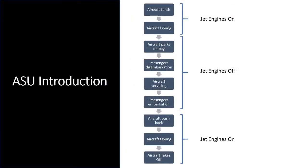We have already studied the sequence of activities that take place between an aircraft landing and takeoff. Jet engines are turned off when the aircraft reaches the bay and are started at aircraft pushback, when the aircraft is ready for departure. This is the point where ASU jumps in — it is the machine that supplies air pressure and airflow for starting aircraft's jet engines.